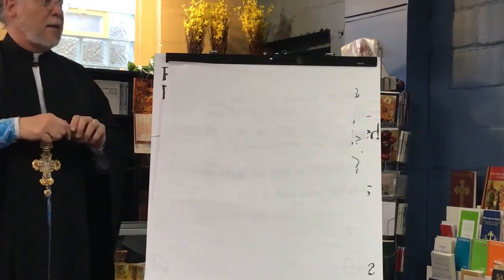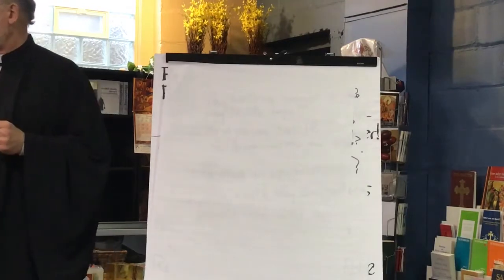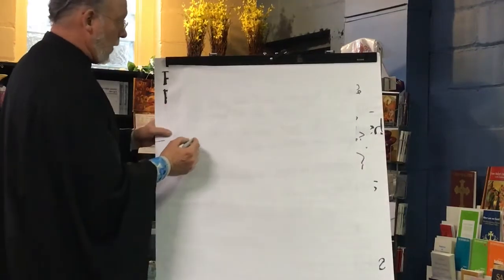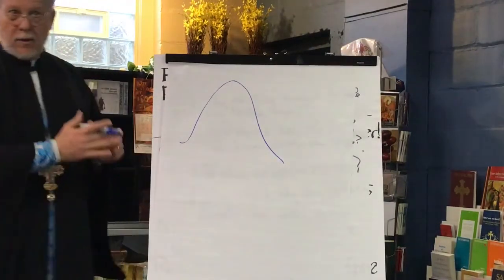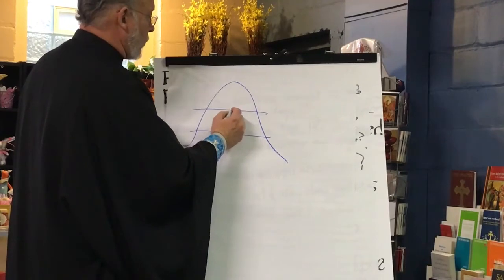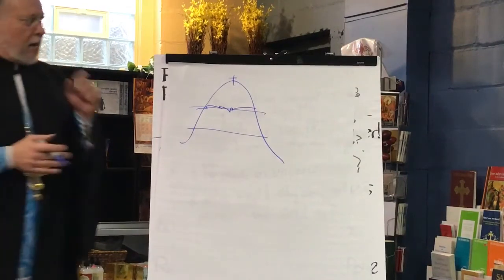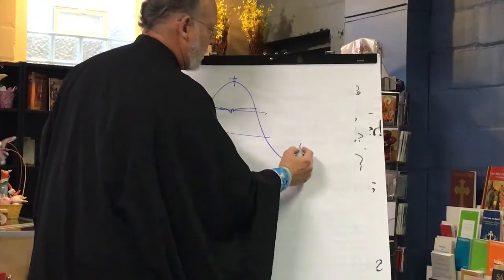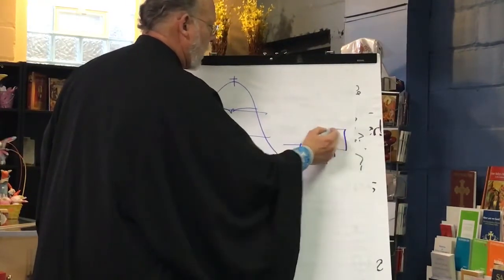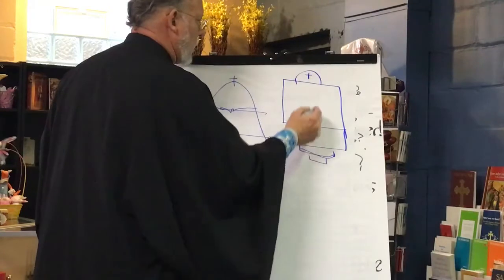As I listen to this, I cannot but be struck by the correspondence between this threefold description of the Church and the threefold description of Eden, where you have the lower mountain, the middle part, and at the top the tree of the knowledge of good and evil, and at the very top the altar. This corresponds to the Church: you have the steps opening onto the narthex, opening onto the nave, opening onto the altar — one, two, three.